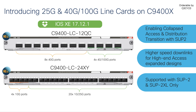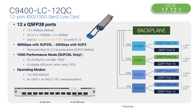Let's take a look at the first line card. This is the C9400-LC-12Q. This line card comes with 12 QSFP ports. The first 8 ports can support 40GB and the last 4 ports can support 40GB and 100GB speed. By default, all 12 ports will be running at 40GB. If you want to enable 100GB mode, one of the 40GB ports in the same port group is going to be disabled.